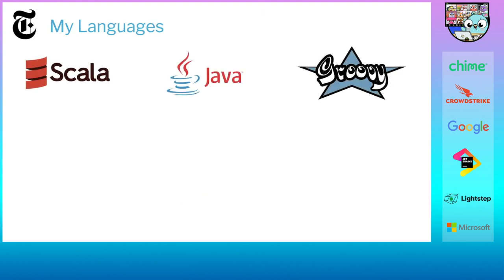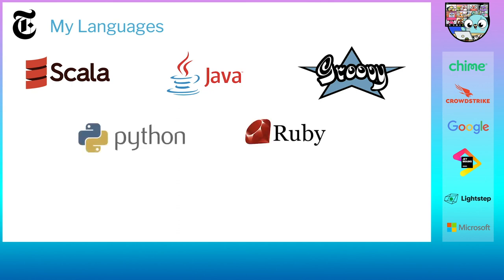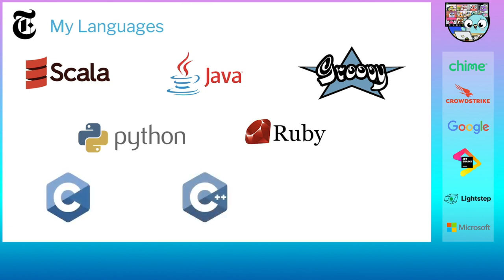I've mostly done work in JVM languages — a lot of Scala and Java and a bit of Groovy. I've done some professional work in Python and Ruby as well. A long time ago I programmed in C and C++, but it's been a while. Most recently, I've learned Go, which has been a cool language to learn.